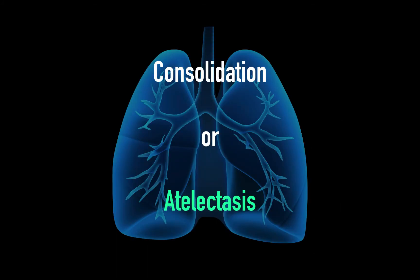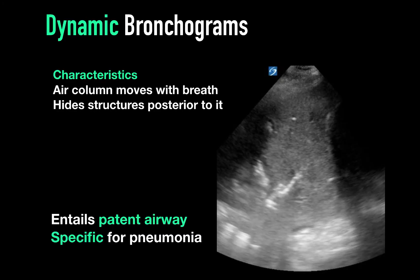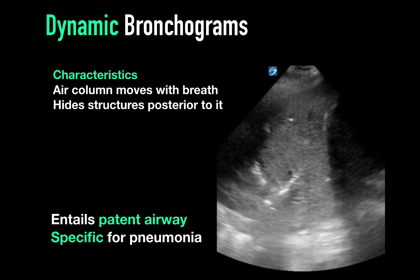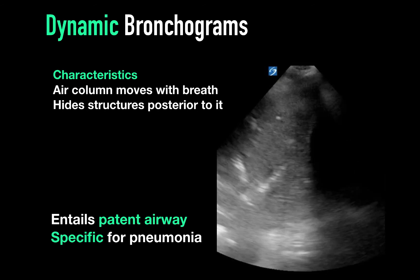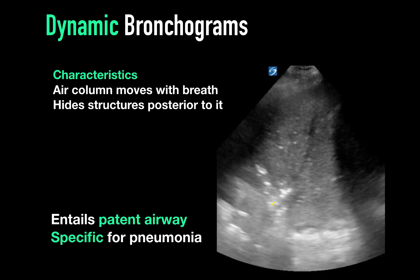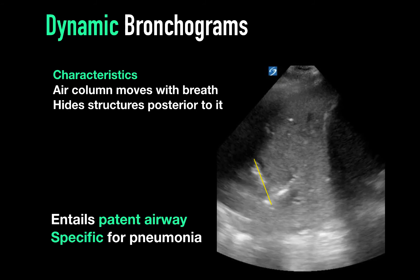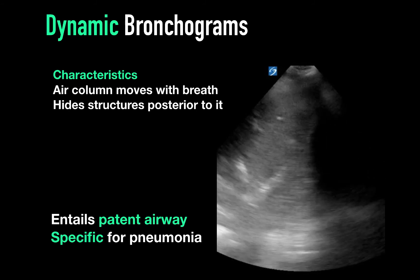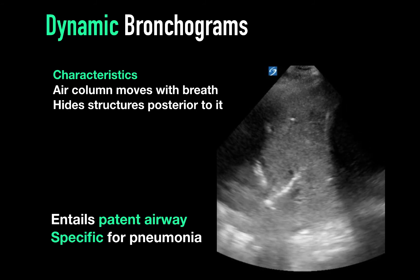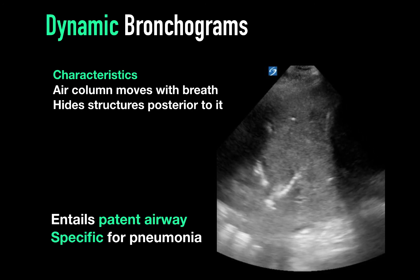It can be challenging to differentiate consolidation versus atelectasis. On an X-ray, we may see air bronchograms, and these can occasionally be displayed on ultrasound in select patients. In this example, we see very heavy consolidation and branching, scintillating, hyperechoic artifacts, which represent air-filled bronchioles. These are air columns that are moving with breathing, and this finding is highly specific for pneumonia or infective consolidation.